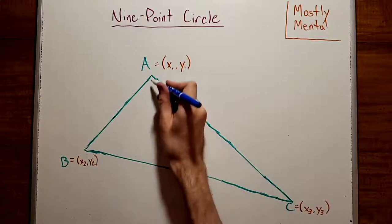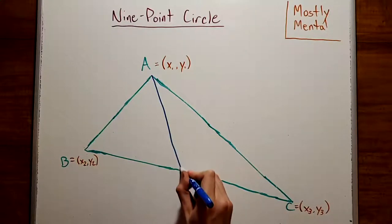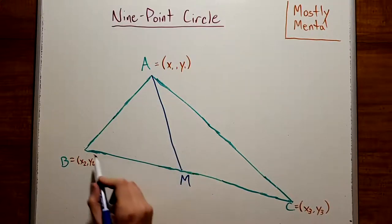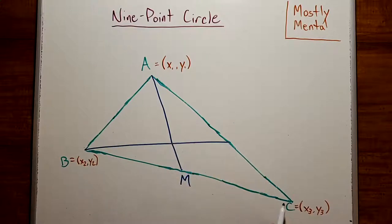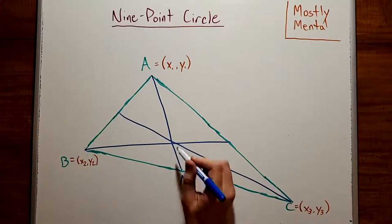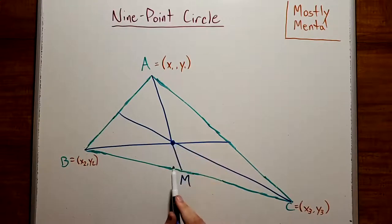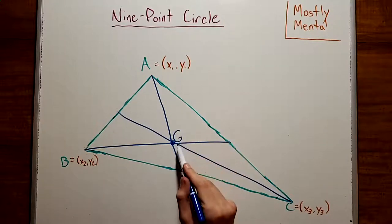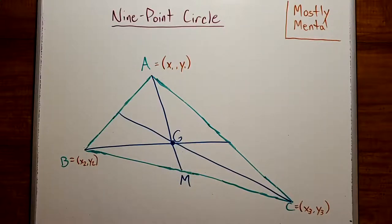First, the centroid. Take a vertex and connect it to the midpoint of the opposite side — this line is known as a median. Then draw in the medians for the other two vertices. If you've drawn the diagram carefully, it looks like these three lines all intersect at a point. And in fact, this will be true no matter what triangle we start with. This point is known as the centroid, G. But why do these lines have to meet at all? There are some very elegant geometric proofs here, but it's easiest to see this using coordinates.